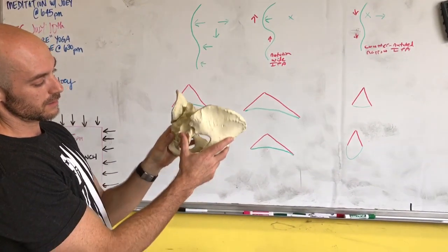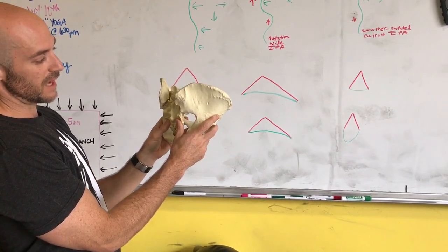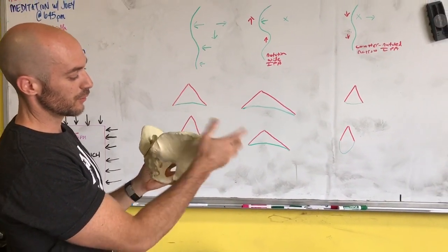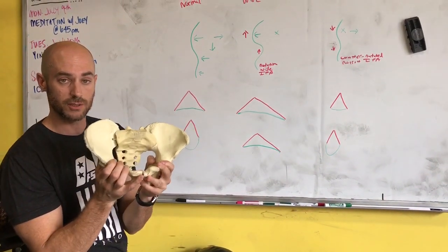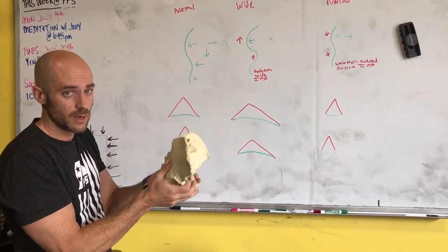For that to occur, I also get an anterior rotation of my innominates. So that's flexion, abduction, external rotation, and anterior rotation, not tilt.